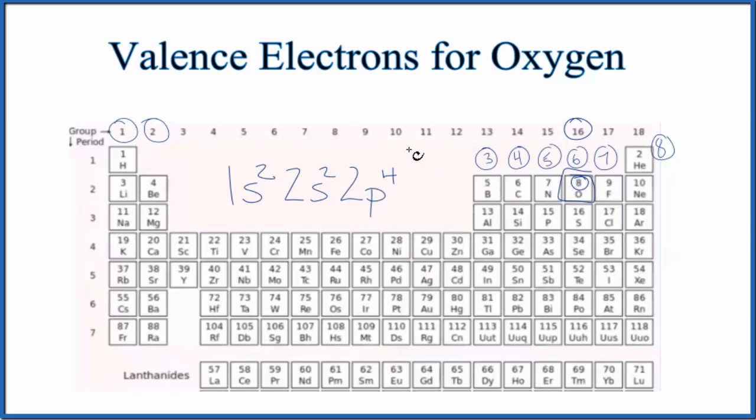But we're only interested in the valence electrons for oxygen. So we're going to take the highest energy level. Think of it as the valence shell. That's the second one, the second energy level here. This second energy level has 2 plus 4, six valence electrons, just like we found before.